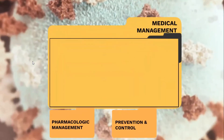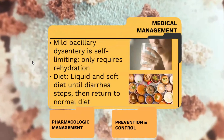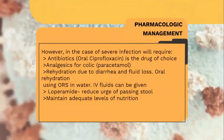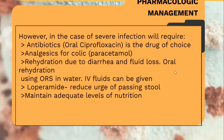The medical management of bacillary dysentery is self-limited and only requires rehydration. The diet includes soft diet until diarrhea stops, then return to normal diet. For severe infection, pharmacological management includes antibiotics — specifically oral ciprofloxacin is the drug of choice — analgesics for colic, oral rehydration using ORS and water, IV fluids as needed, and loperamide to reduce the urge of passing stool. Maintain adequate levels of nutrition.